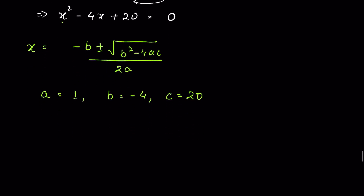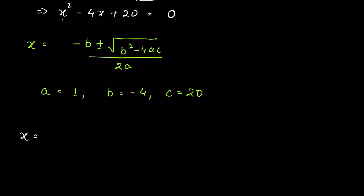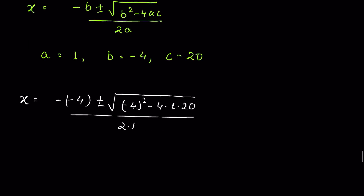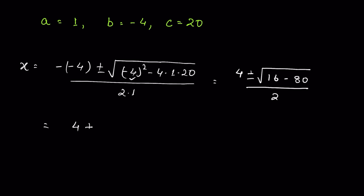Now let's find the value of x. So x equals minus(minus 4) plus or minus the square root of (minus 4) squared minus 4 times 1 times 20, all upon 2 times 1. This gives 4 plus or minus the square root of 16 minus 80, all upon 2, or 4 plus or minus the square root of minus 64, upon 2.